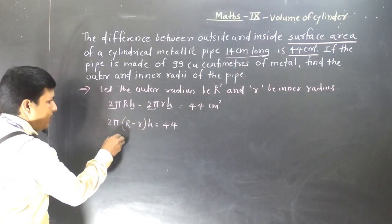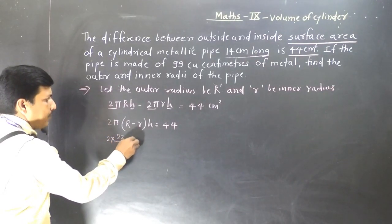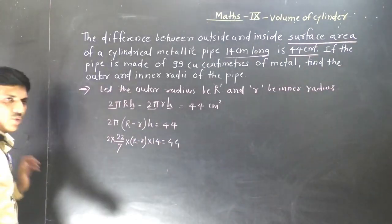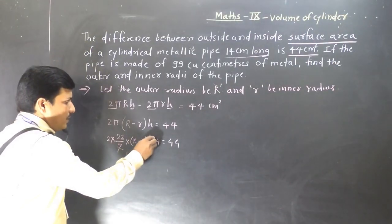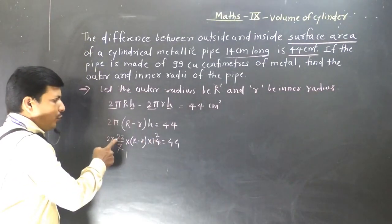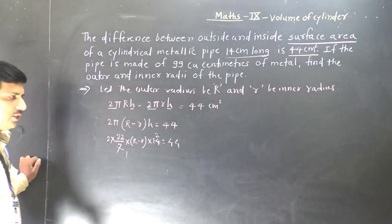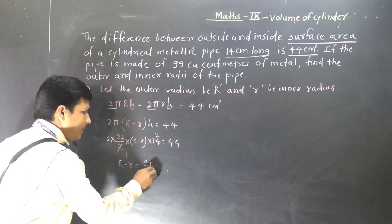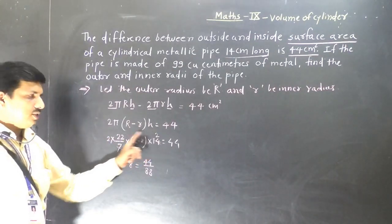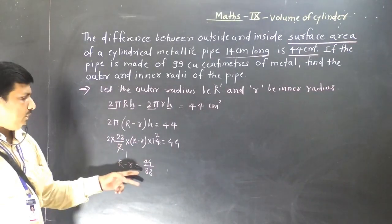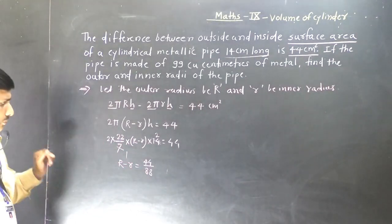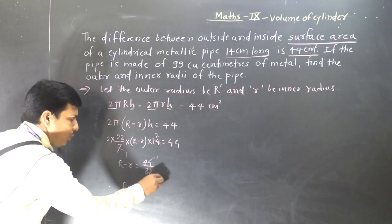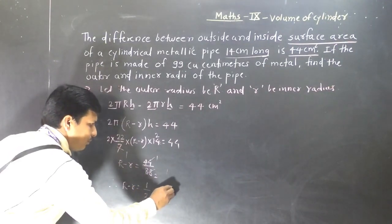So substituting: 2 multiplied by 22/7 times (R minus r) times height 14 equals 44 cm square. Cancelling: 7 into 14 gives 2, and 22 into 44 gives 2, so the denominator becomes 80. Thus capital R minus small r equals 44 divided by 80, which simplifies to 1/2. This is our first equation.